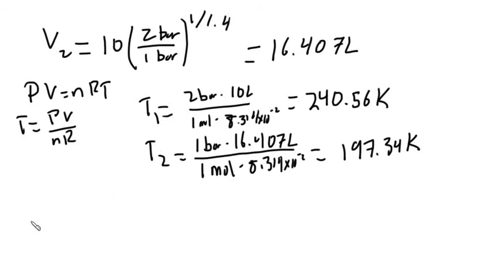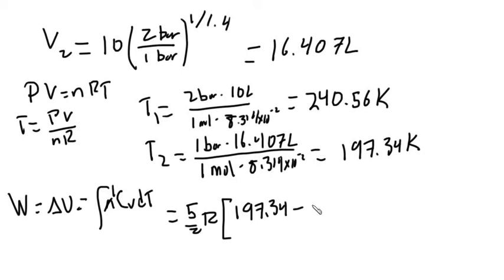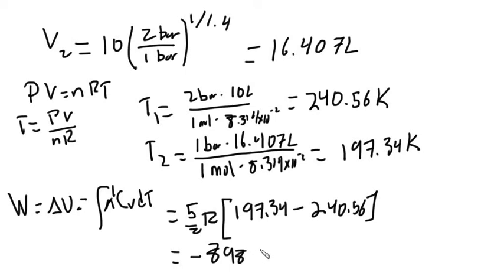To find the work, since the process is adiabatic, work equals delta U. We have both temperatures so it is easier to solve using temperature rather than volume. The work equals the integral of n·Cv·dT, with n = 1 mole and Cv = 5/2 R. Evaluating: w = 1 × (5/2) × 8.314 × (197.34 − 240.56) = −898 joules.